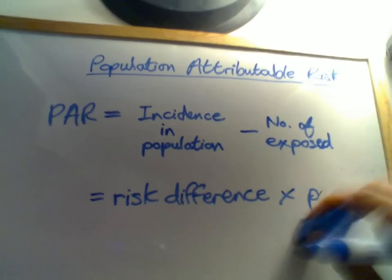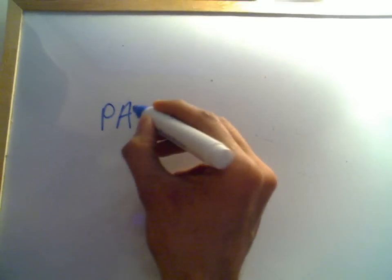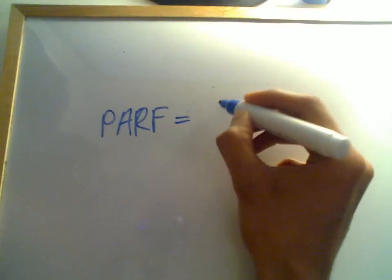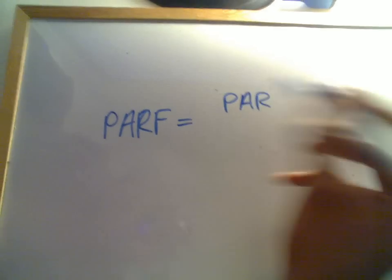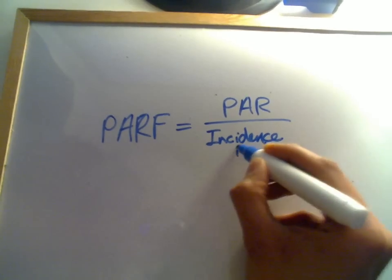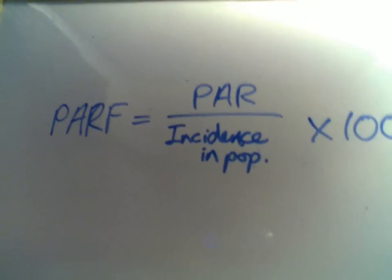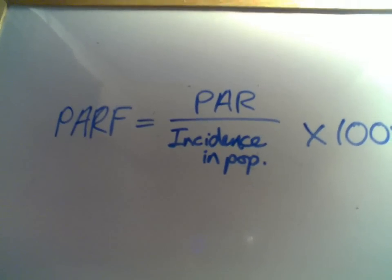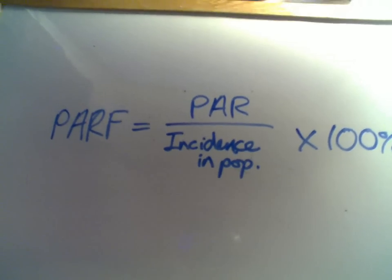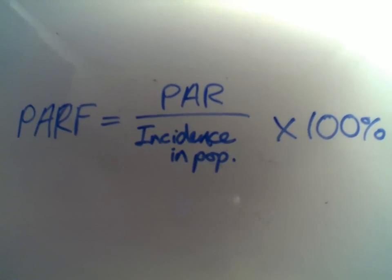The next thing we've got is population attributable risk fraction. That's just population attributable risk, which we've just covered, over the incidence in the population, and then you times that by 100, and that will give you the population attributable risk fraction. Just remember that population attributable risk is looking at the amount of disease that is statistically attributable to an exposure, and population attributable risk fraction is looking more at the disease burden.